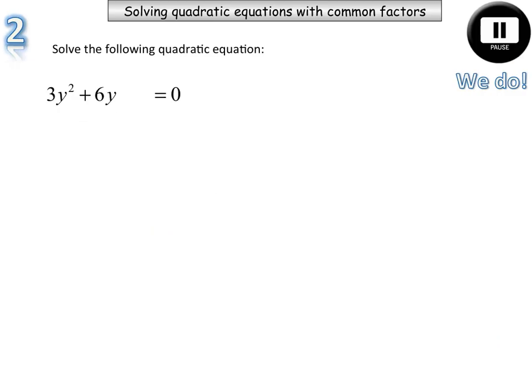OK, our second example involves the quadratic with an expression in terms of y. So rather than x, we've got y. So we've got 3y squared plus 6y is equal to 0. Pause the video and see how you went.